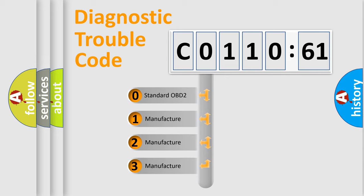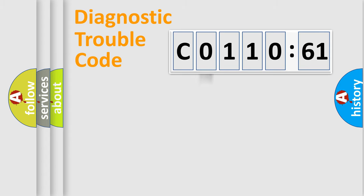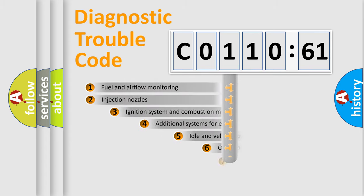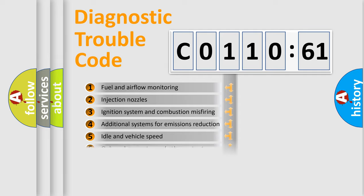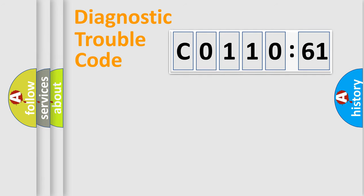If the second character is expressed as zero, it is a standardized error. In the case of numbers 1, 2, or 3, it is a manufacturer-specific error. The third character specifies a subset of errors. The distribution shown is valid only for the standardized DTC code. Only the last two characters define the specific fault of the group.